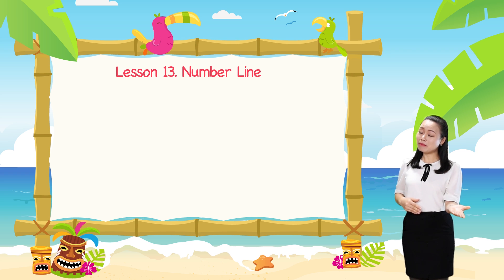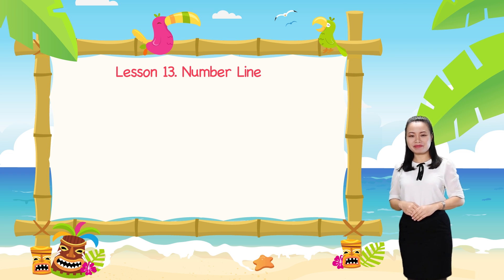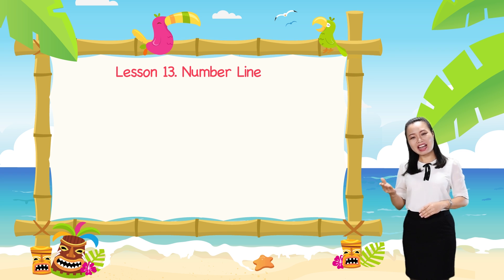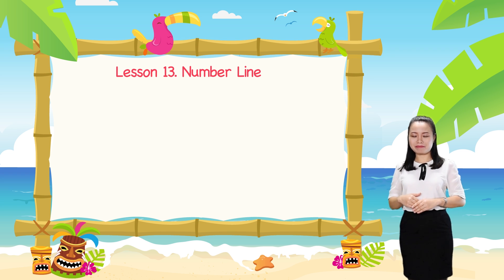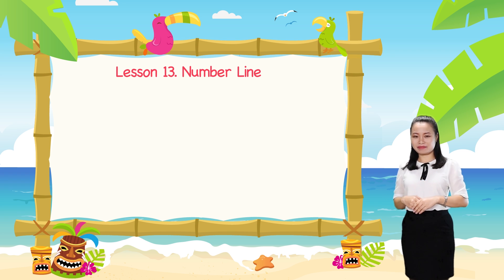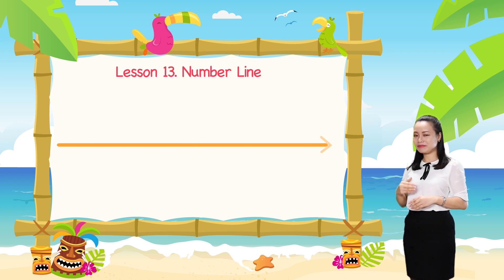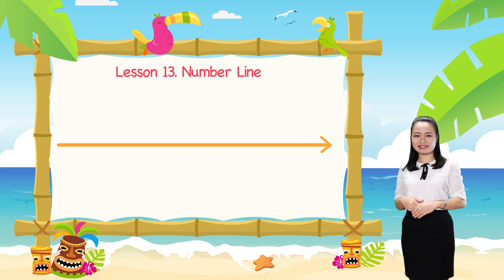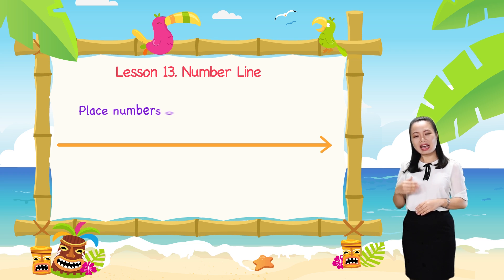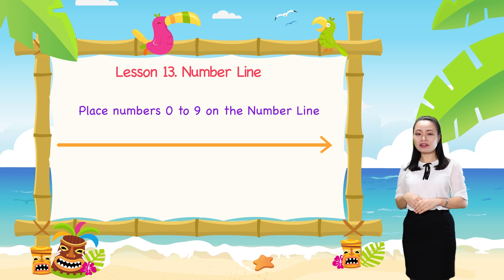Now, let me show you how to draw a number line. First, draw a line. Then, place numbers 0 to 9 on the number line. Let's do it together.